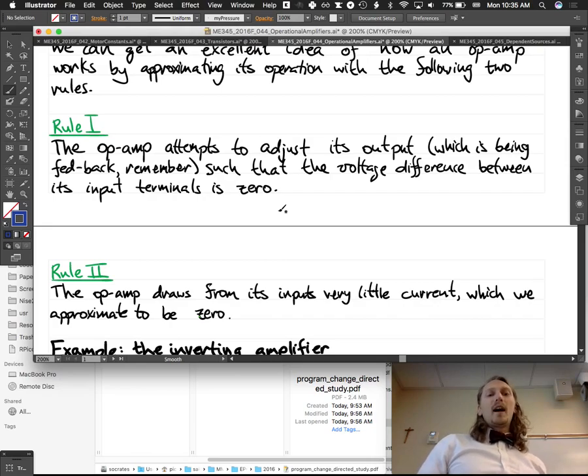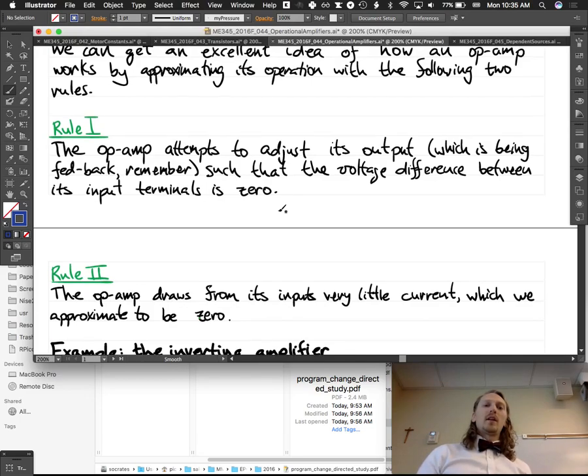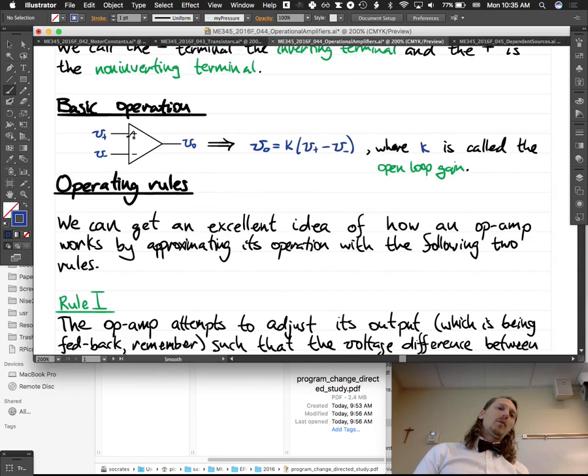Rule two is that the op-amp draws from its inputs very little current, which we approximate to be zero. So, what this op-amp's trying to do is make the difference in these voltages zero, and it also draws very little current from these. So, what that means is, if it's drawing very little current, it's hardly affecting the circuit on this left-hand side, right? It's hardly drawing any current. It's sort of like when you connect a voltmeter, a multimeter, to a circuit. It draws very little current.